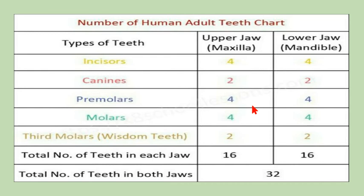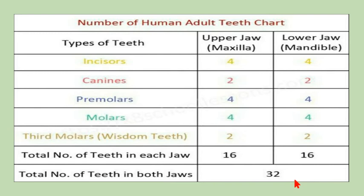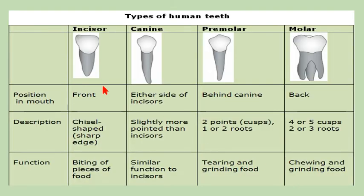In permanent teeth, incisors in the upper and lower jaw are eight in number, canines are four in number in both jaws, premolars are also eight in number, molars are eight in number, and third molars (wisdom teeth) are four in number. This makes a total of 16 in the upper jaw and 16 in the lower jaw, giving 32 teeth in total for secondary teeth.